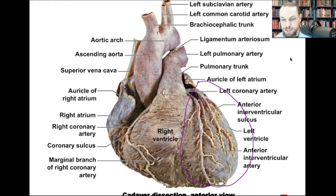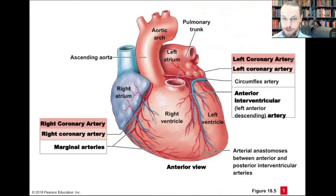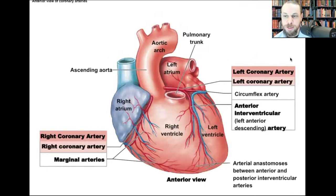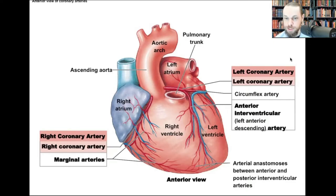The left side of the heart is the workhorse. Now let's talk about the coronary arteries. The reason they're called coronary is because the heart is like the crown. Coronary arteries supply blood to the heart muscle itself — the myocardium — and they penetrate from the epicardial surface through to the myocardium and endocardium, supplying nutrients and oxygen throughout the entire wall.